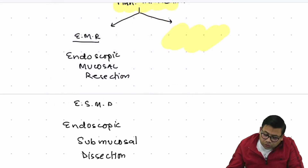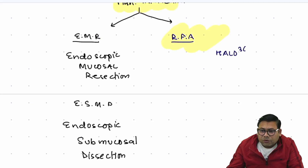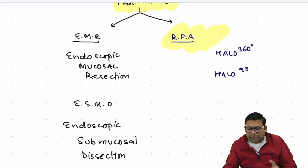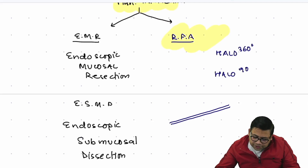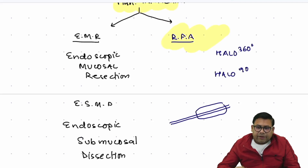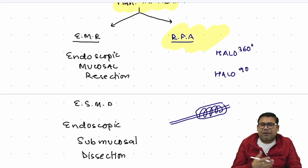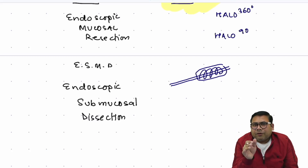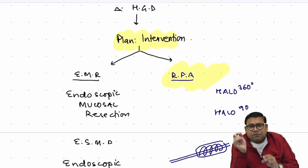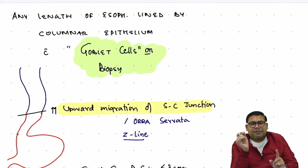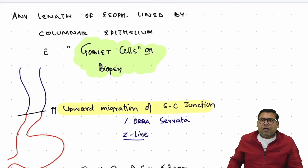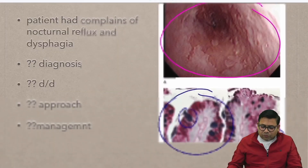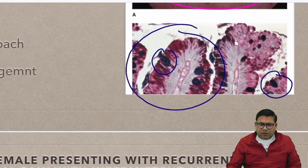Another intervention option is RFA — radio frequency ablation. The devices used are the Halo 360 and Halo 90. These are fiber-based instruments with a 360-degree filament or a 90-degree instrument, designed to mount on the cable of the upper GI endoscopy. In a nutshell, Barrett's esophagus is a pre-malignant state with columnar epithelium and goblet cells, confirmed on biopsy.